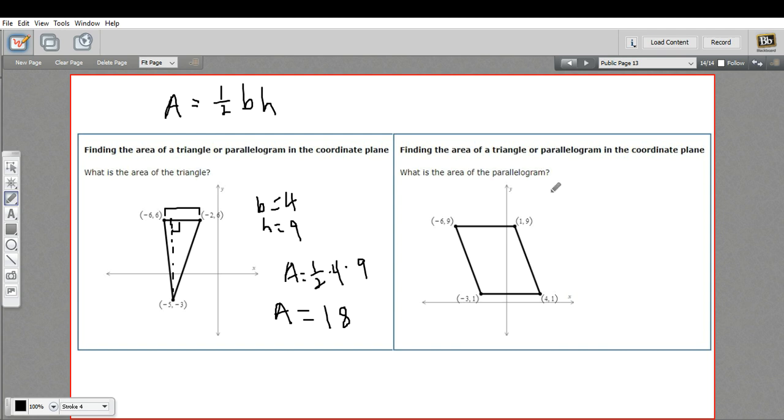So for a parallelogram, it's pretty similar. The formula is the area equals the base times the height. So we can say this is our base, and we'll find the length of that by looking at the difference between the x-coordinates. So we have negative 3 up to 4. That's a distance of 7. So that side is 7.